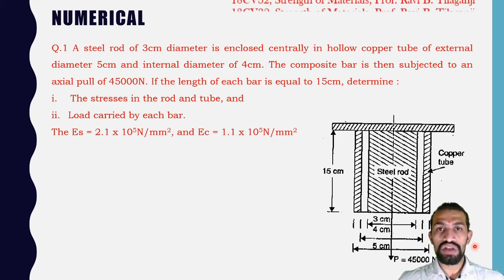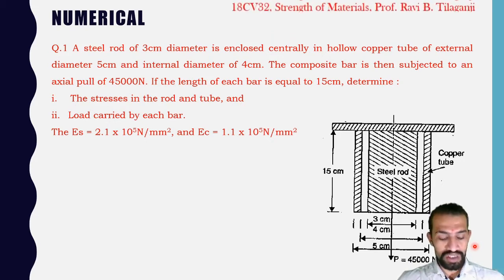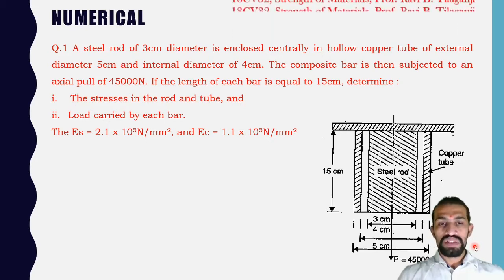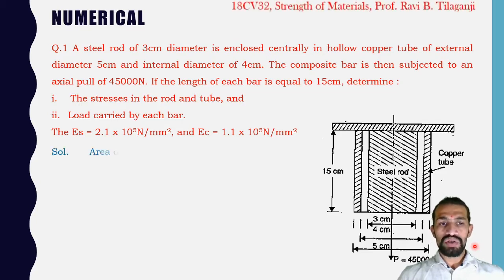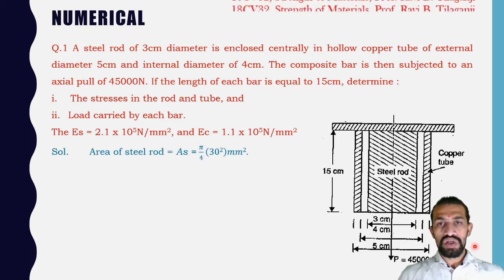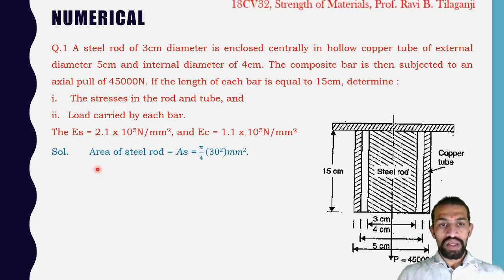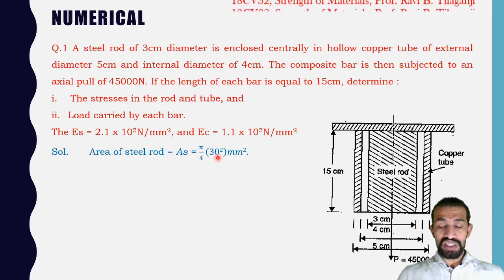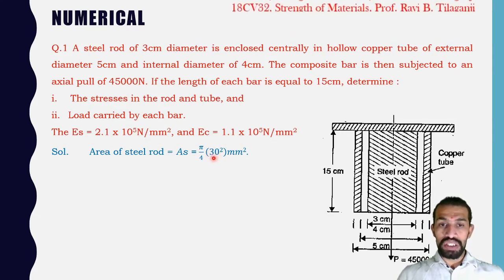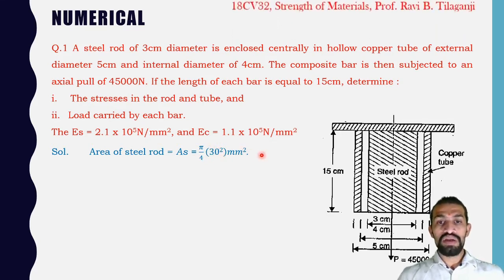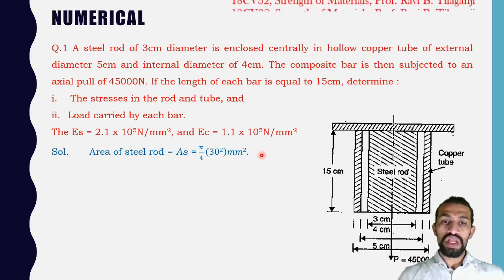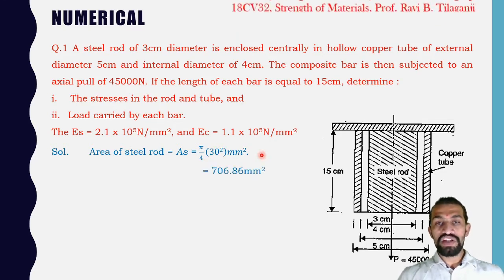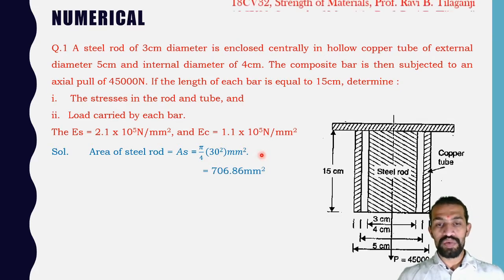Starting with the solution: the area of the steel rod is AS = π/4 × 30² (converting 3 cm to 30 mm), giving AS = 706.86 mm².